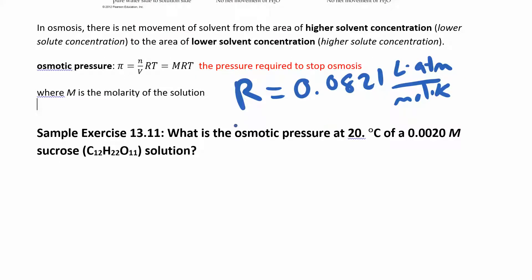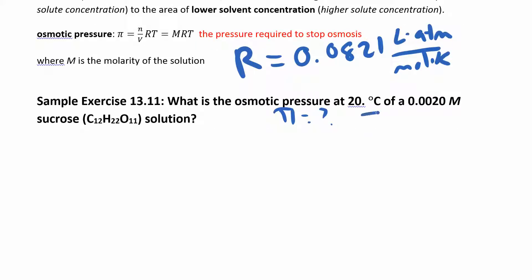In this problem, what's the osmotic pressure? They give you temperature of 20°C, but we need kelvin, so add 273 to get 293 kelvin. They give us the molarity: 0.0020 M. Sometimes they give you moles and liters separately, but if they give molarity, just plug it in.